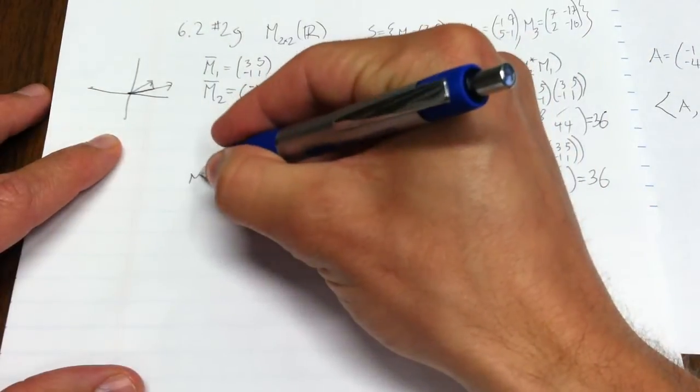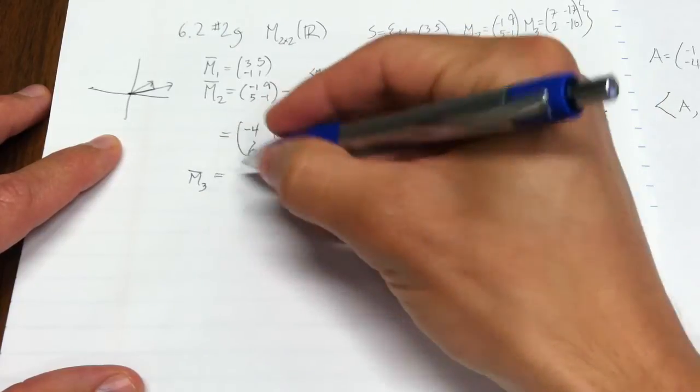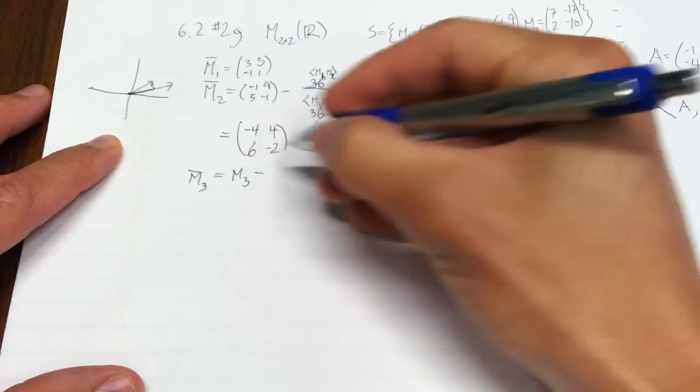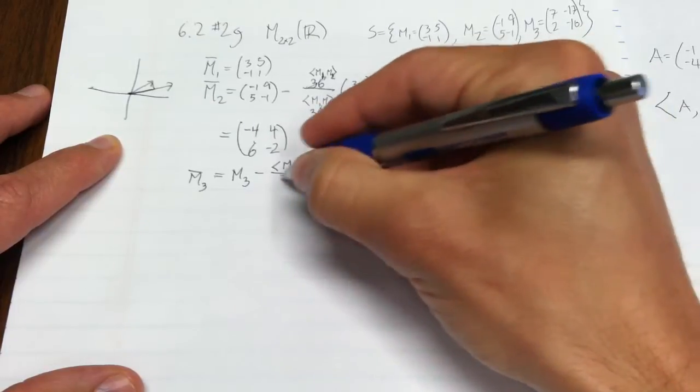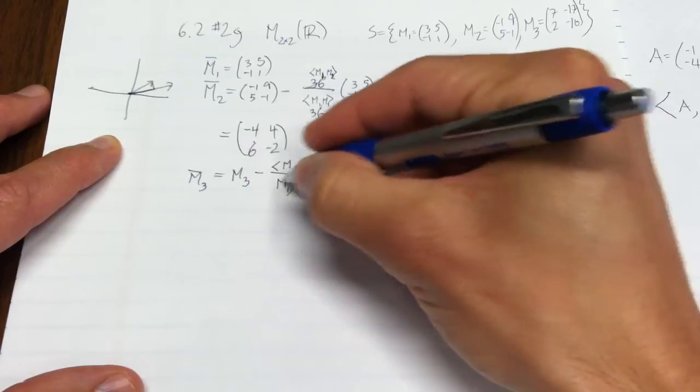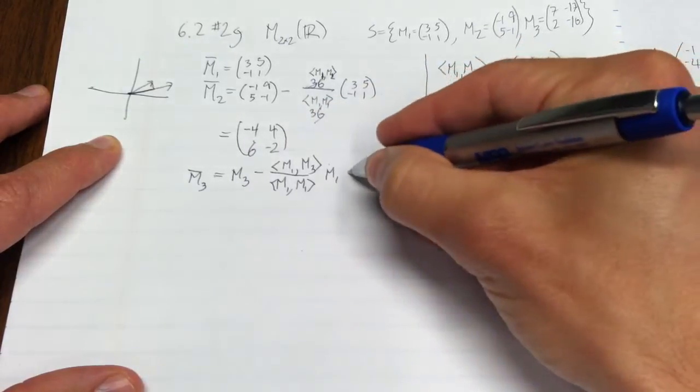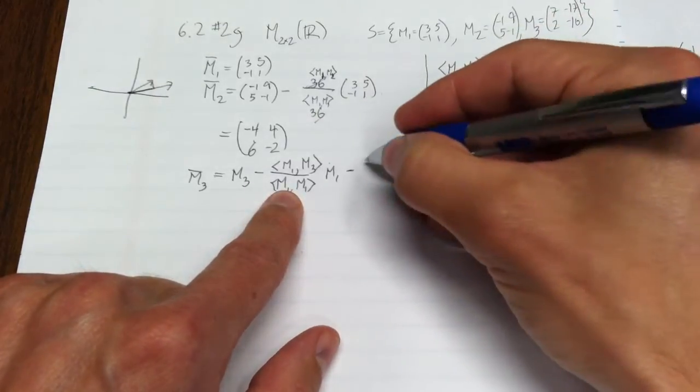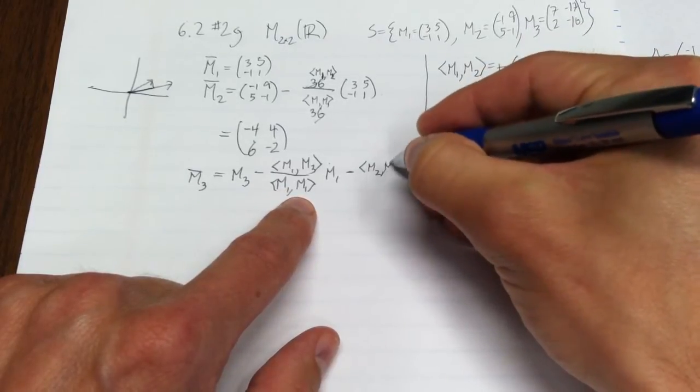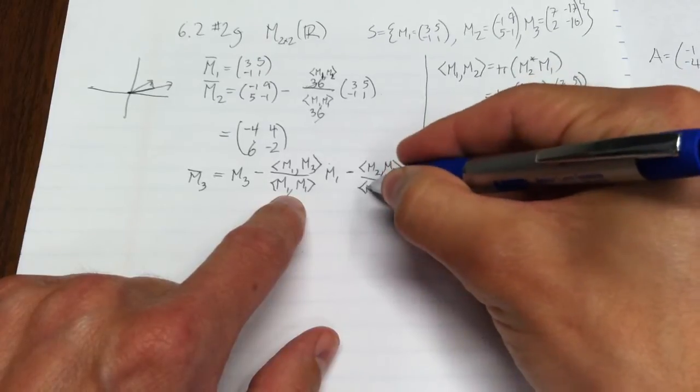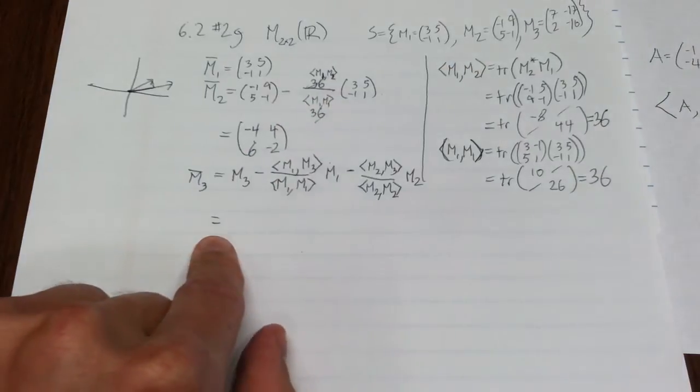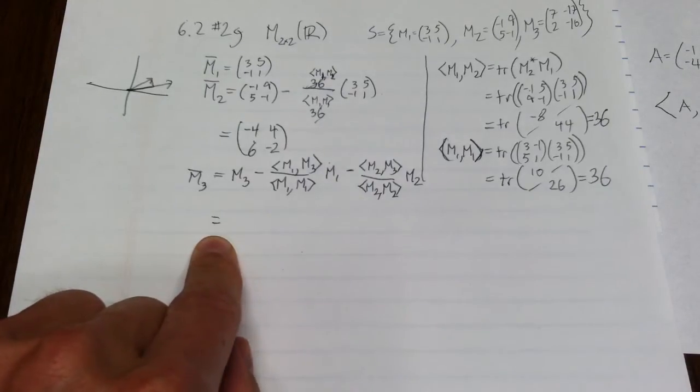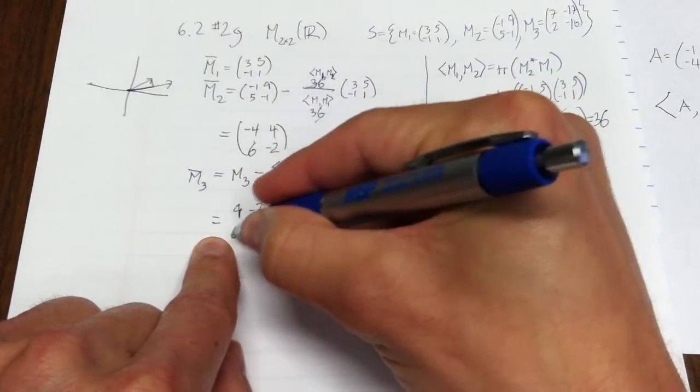You can do that same process with m3, but you have to make sure that it's orthogonal first to m1. Well, how do you do that? You do m1 inner product with m3 over m1 inner product with m1 in the direction of m1, then you have to take away the part that is parallel to m2. We go m2, m3. If you take away the part that's parallel to m1 and the part that's parallel to m2, you're left with the part that's perpendicular to both of them. In this case, let's see, what are we going to get? I'll just tell you what the calculation is. It's (9, -3, 6, -6).